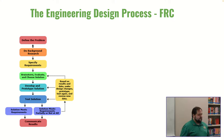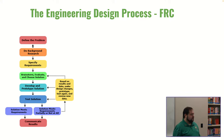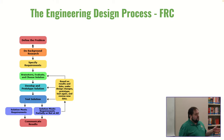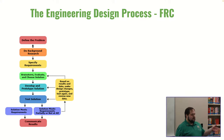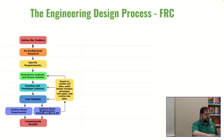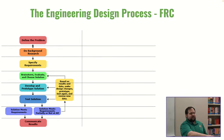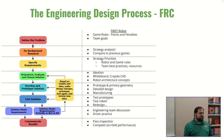Here's an overview of the engineering design process. Step one: define the problem. Step two: background research. Step three: specify requirements. Then brainstorm, evaluate, and choose a solution. Develop and prototype the solution, test it, and determine if it meets the requirements. If it doesn't — maybe not all of them, maybe none — you go back to the appropriate step and iterate through brainstorm, develop, and test until you get a solution that meets all requirements. The last step is to communicate the results.